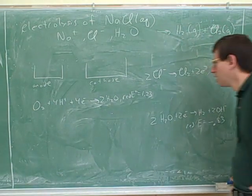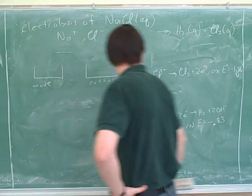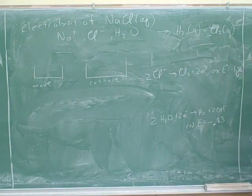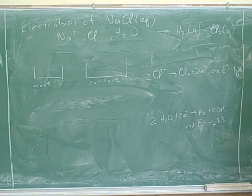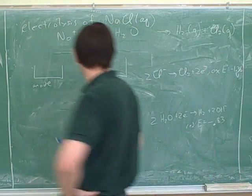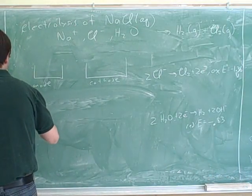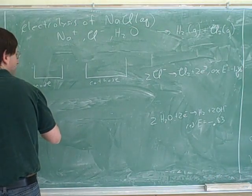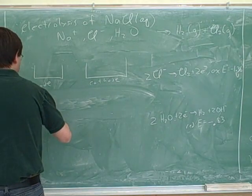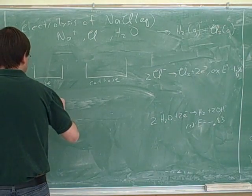So the chlorine is oxidizing, so it would be the anode. But wait, it's still oxidizing. It doesn't want to do this. It's being forced to.